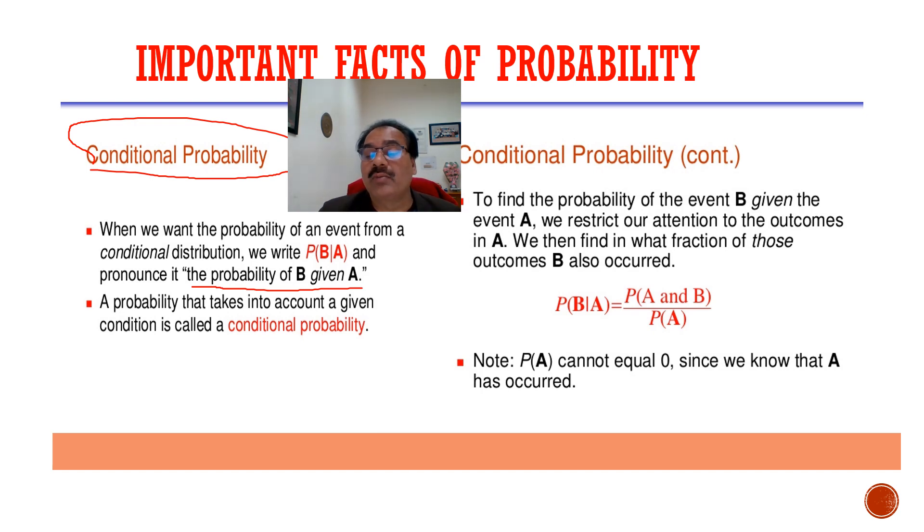To find the probability of the event B given the event A, we restrict our attention to the outcomes in A. We then find in what fraction of those outcomes B also occurred. So P of B given A is equal to P of A and B divided by P of A. P of A cannot equal 0 since we know that A has already occurred.